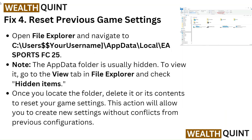Fix 4: Reset Previous Game Settings. Open File Explorer and navigate to C:\Users\[YourUsername]\AppData\Local\EA Sports FC 25. Note: the AppData folder is usually hidden. To view it, go to the View tab in File Explorer and check Hidden Items. Once you locate the folder, delete it or its contents to reset your game settings. This will allow you to create new settings without conflicts from previous configurations.